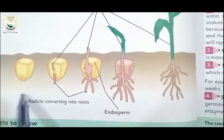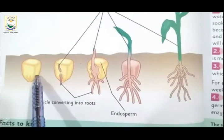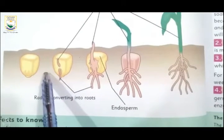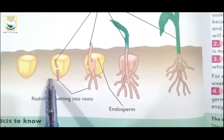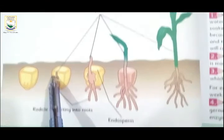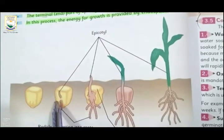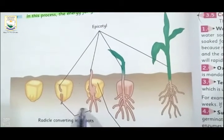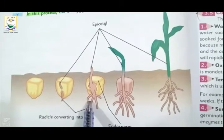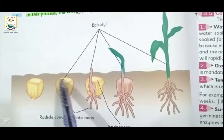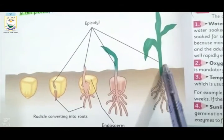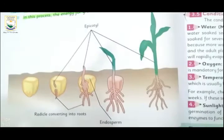آپ اس میں دیکھیں. ہمارے پاس یہ Seed ہے، یہ Below the Ground ہے. Seed germinate کیا. یہ ہمارے پاس Radicle اور یہ ہمارے پاس Epicotyle. Radicle آگے Roots میں Convert ہو جائے گا. اور Epicotyle، Stem اور Shoot وغیرہ میں Convert ہونا شروع ہوگی اور Plant کی Growth ہو جائے گی.